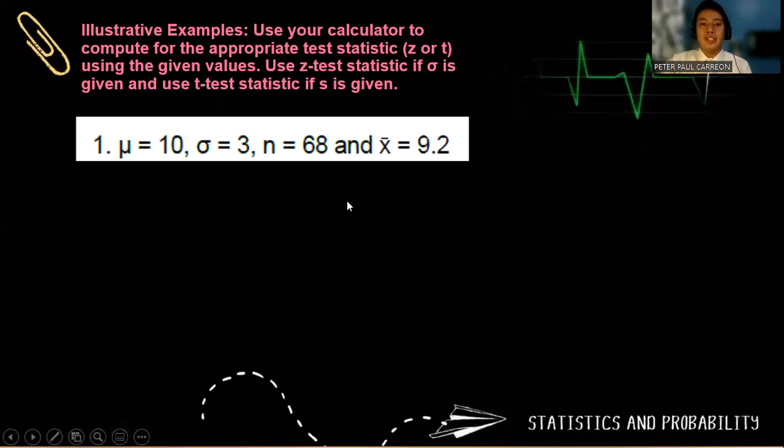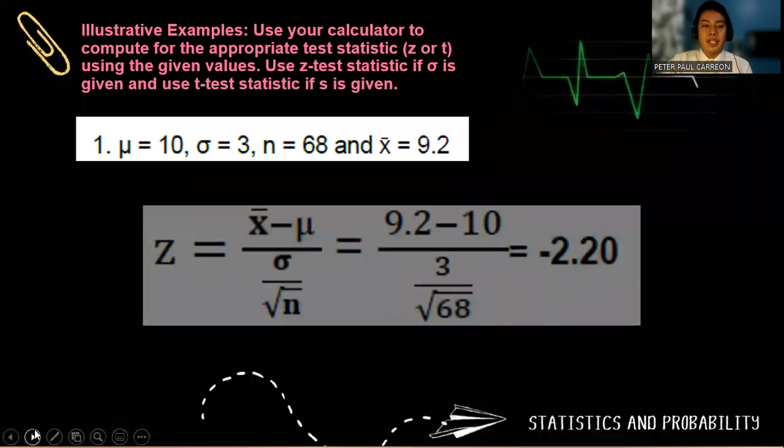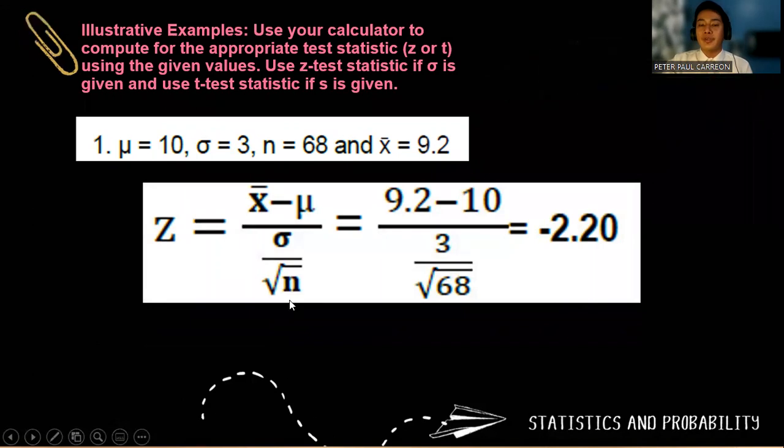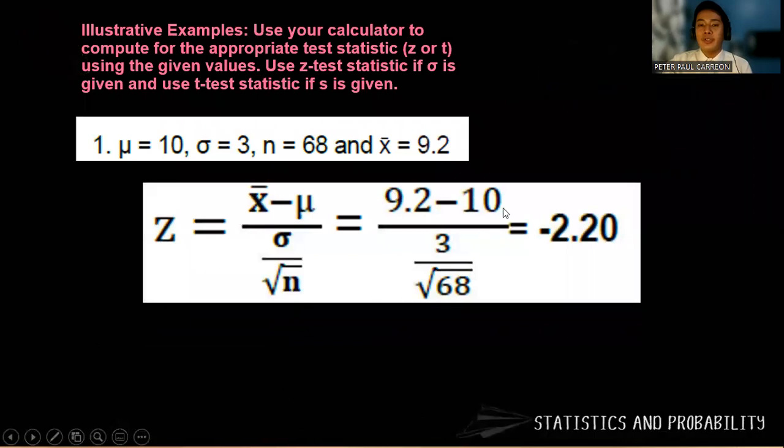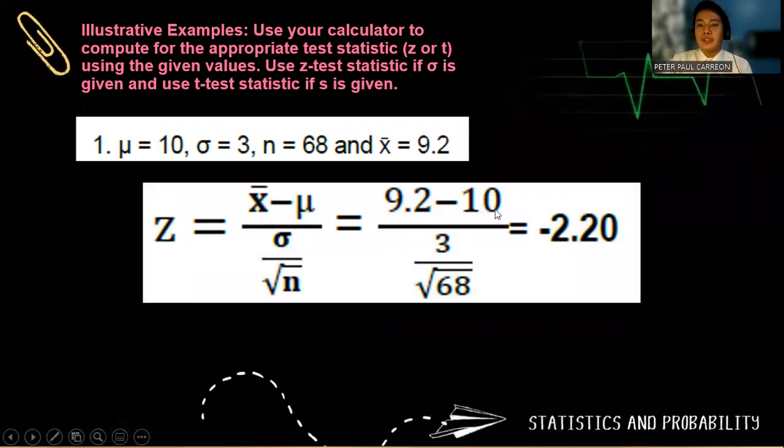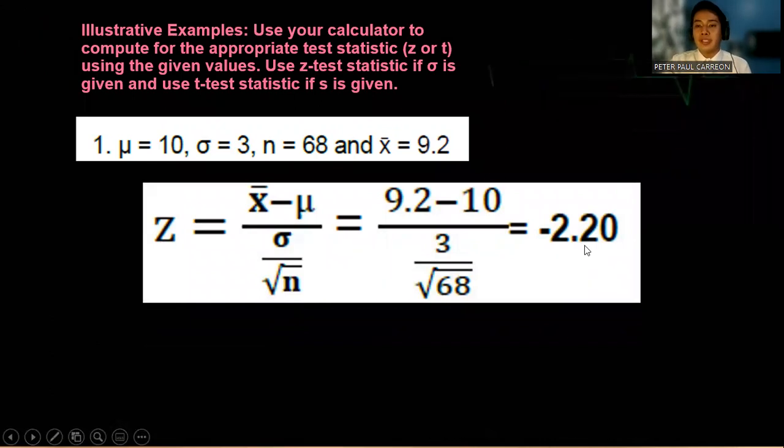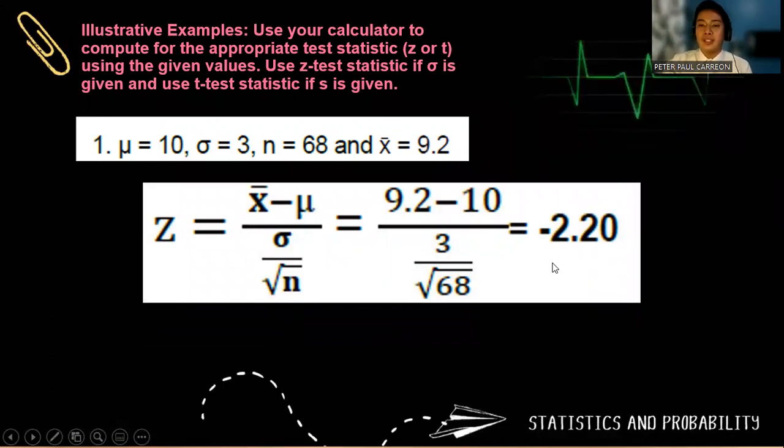Let's have an illustrative example. Use your calculator to compute the appropriate test statistic Z or T using the given values. Use Z test statistic if sigma is given and T test statistic if S is given. Since here in the exact given example sigma is given, we use a Z test. The formula is Z equals X bar minus mu over sigma over the square root of N. Substituting the values respectively, we have 9.2 minus 10 over 3 over the square root of 68. Using a scientific calculator, you can put these values on how you exactly see it. The answer should be rounded off to two decimal places or nearest hundreds. So the answer is negative 2.20.